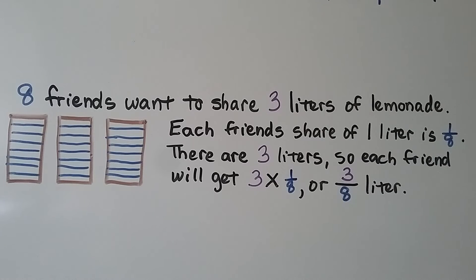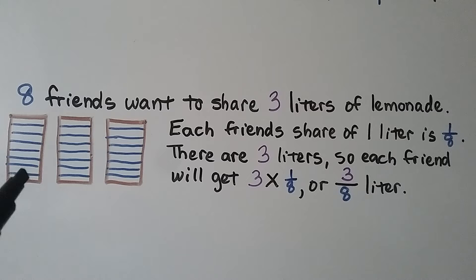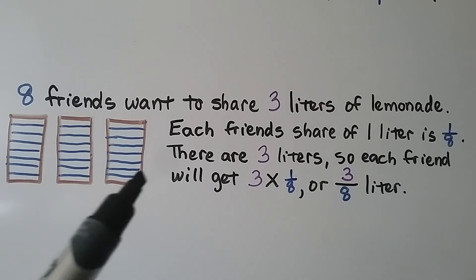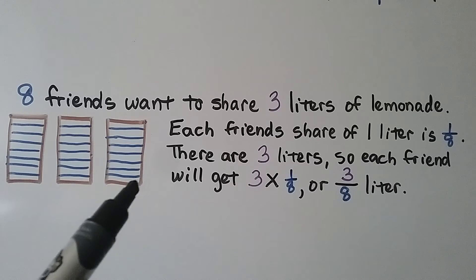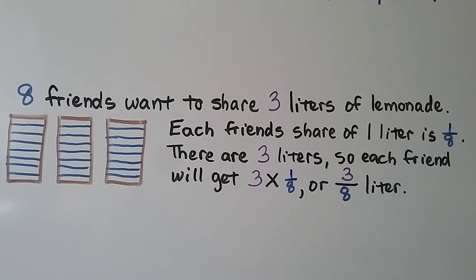If we have 8 friends that want to share 3 liters of lemonade, then each friend's share of 1 liter is 1 eighth. And there are 3 liters, so each friend will get 3 times 1 eighth, or 3 eighths of a liter.